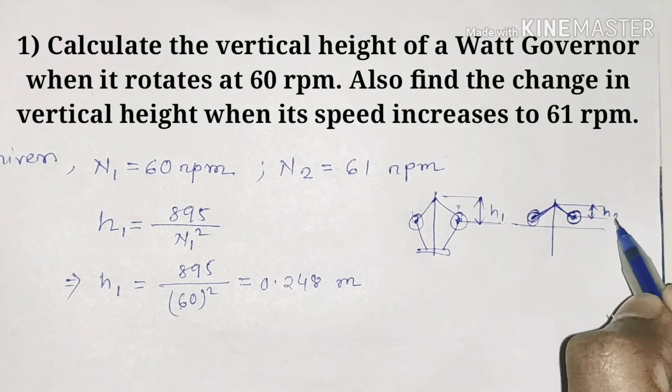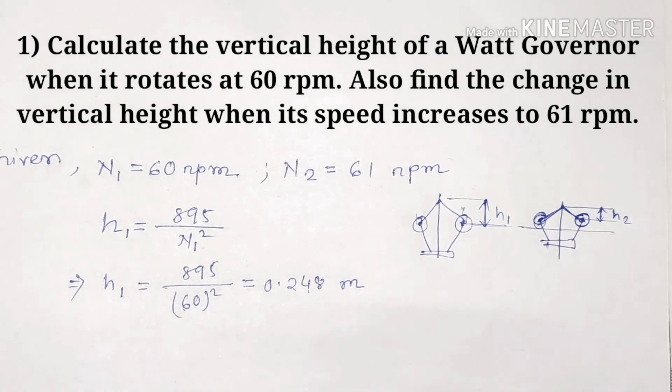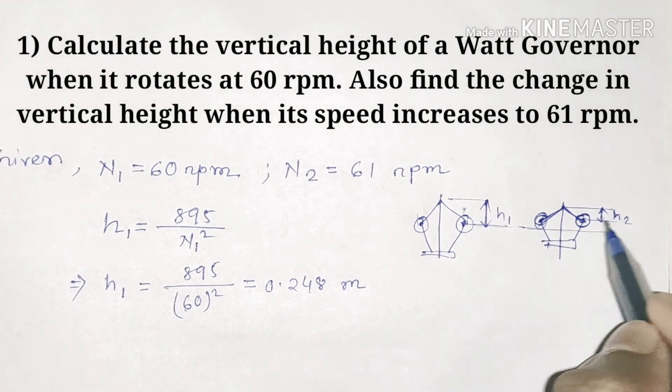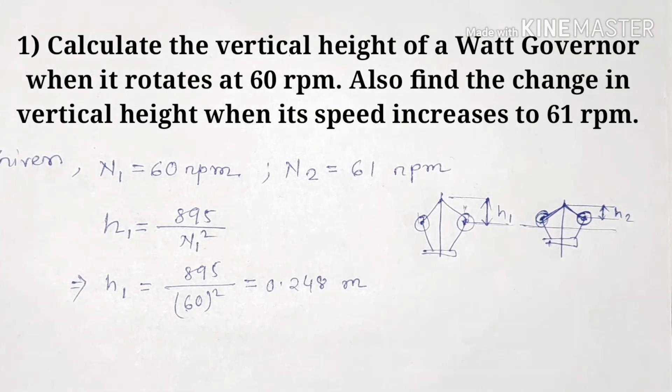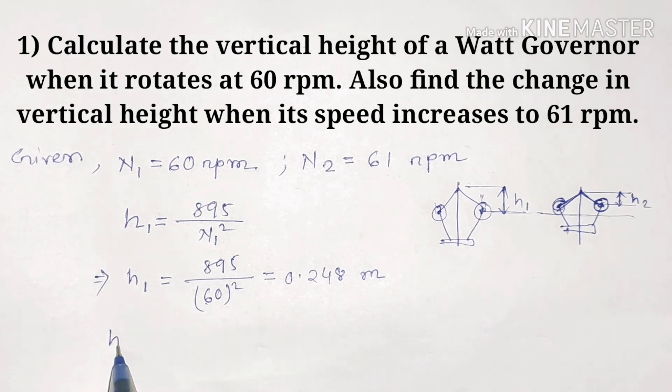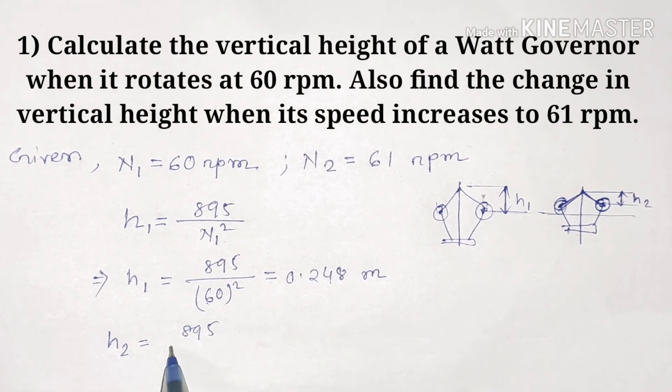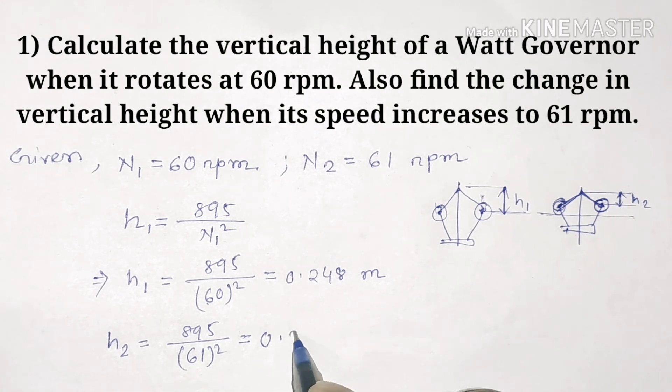You will understand that this is h2 and this is h1. Now we have to find the change in vertical height. We will use the same formula. h2 is 895 by n2 square, n2 is 61 whole square. So this value will be 0.24.